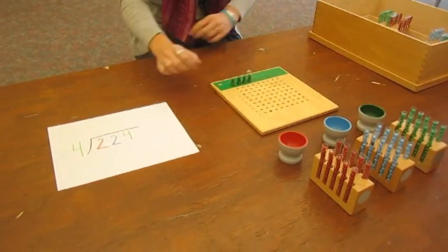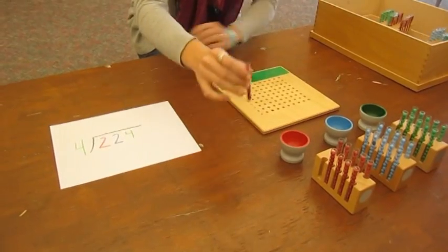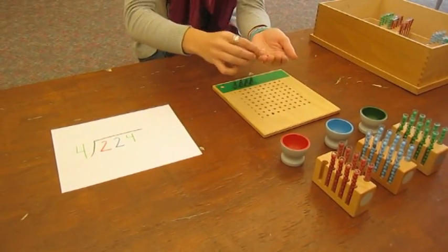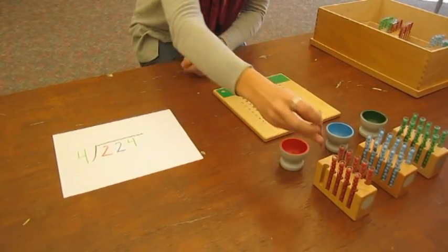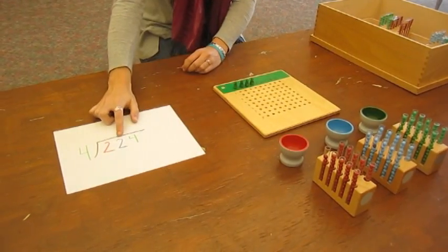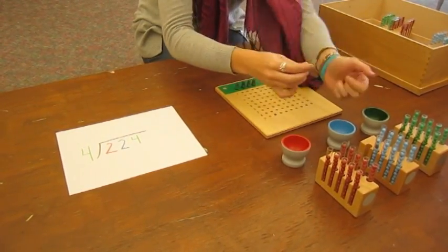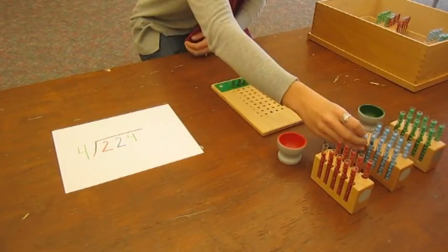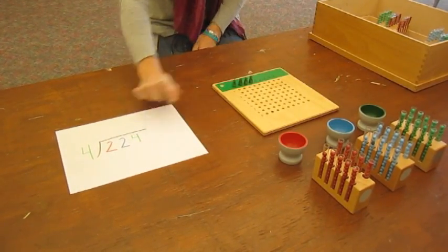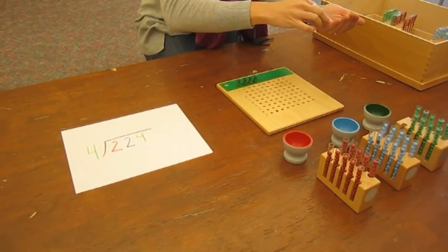So we're going to start out with our two hundreds and place them in our cups. Then we're going to go to our two tens and place those in our cup. Finally we are going to put our four units into our units cup.